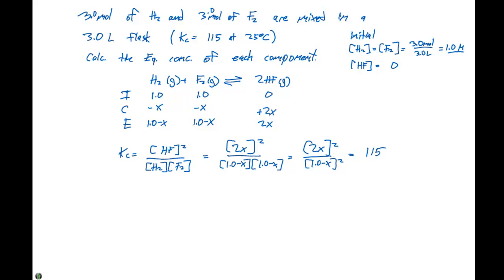We did a previous example where we had to use the quadratic equation, and it's possible we have to use it here, but we can take a shortcut. If we take the square root of both sides of this equation, the square root will get rid of our exponent. That allows us to simplify this down into 2x divided by 1.0 minus x equals the square root of 115.